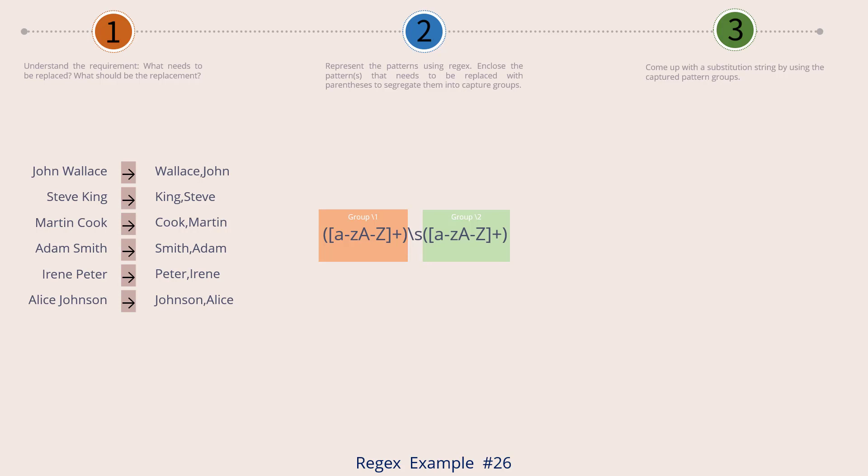Let's now move to the final step. Here we come up with a replacement string. The string should be of the format last name comma first name. So we write down this phrase and in place of the first name and last name we use the capture groups.